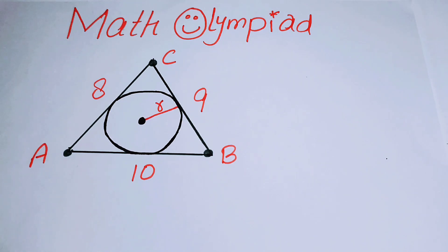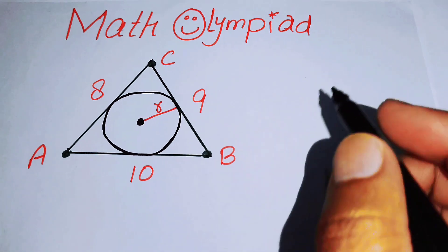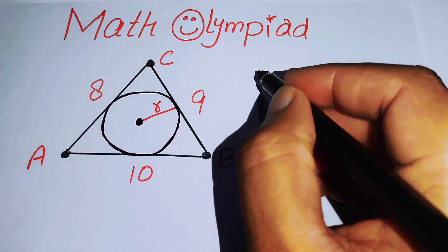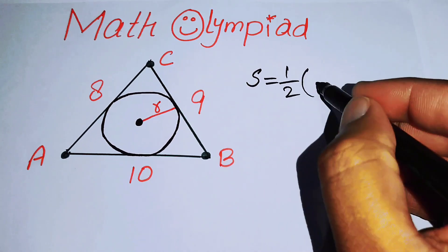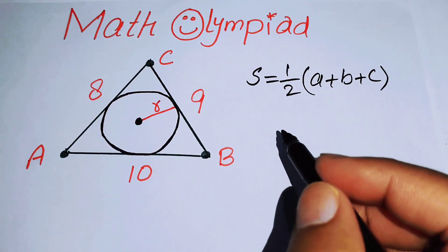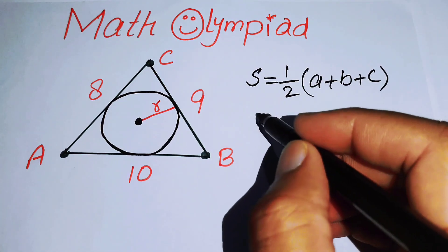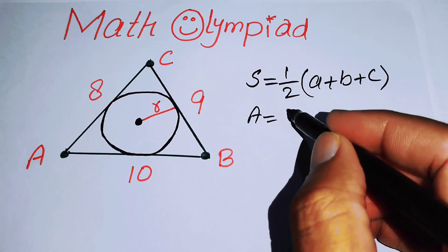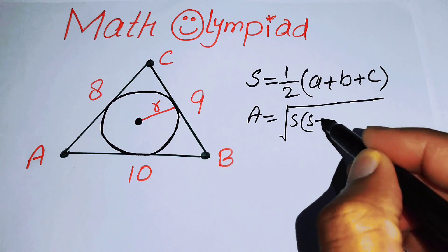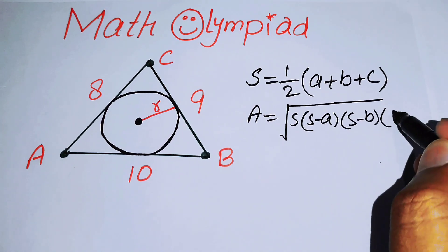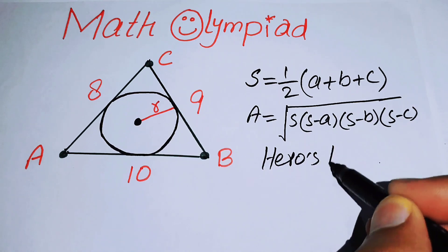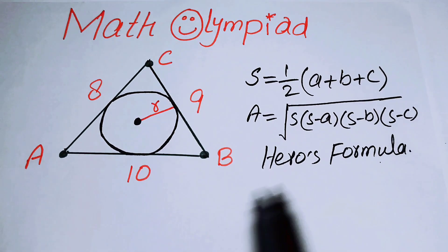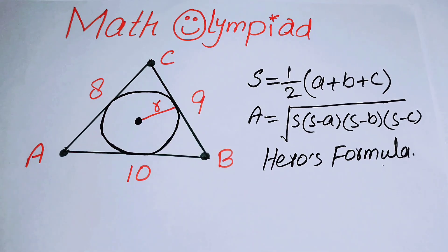The first thing we are going to do — we have a triangle, and you know that the semi-perimeter of the triangle is denoted by s, and it equals one over two times (a + b + c). The area of triangle ABC equals the square root of s(s−a)(s−b)(s−c). This formula is known as Heron's formula.